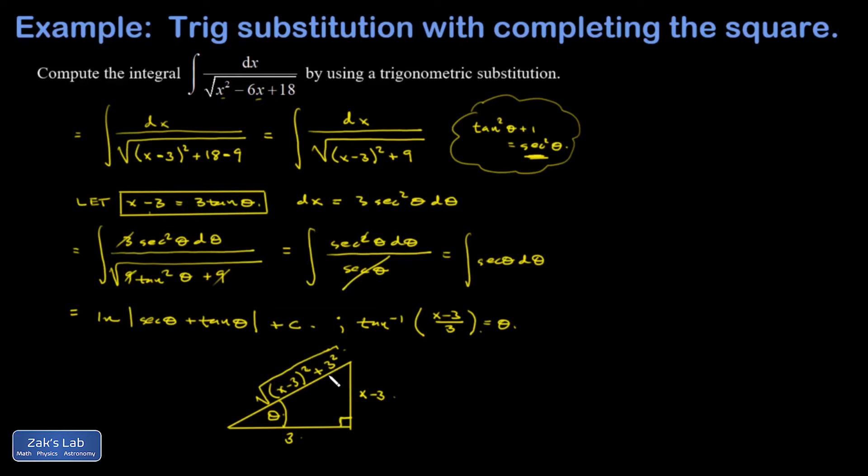So I get the square root of the sum of the squares of the legs. Now the secant is 1 over the cosine function, and the cosine would be 3 over the hypotenuse, so the secant is going to be the hypotenuse over 3. So now I can rewrite my final answer.